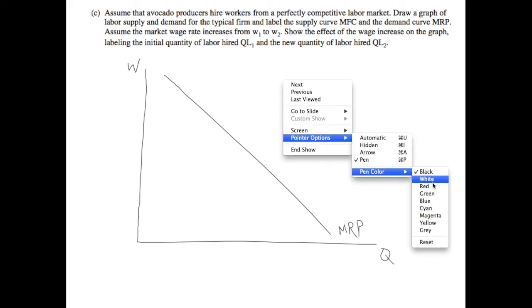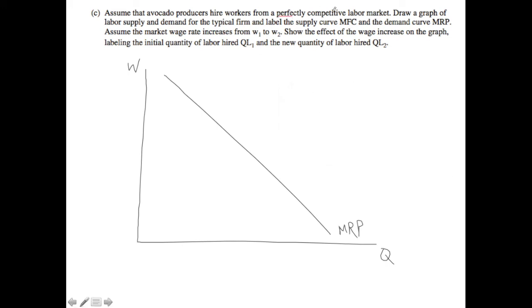So first, let's go ahead and draw the horizontal and vertical axis here. We know that wage is going to be on your vertical and quantity is going to be on your horizontal. And you also know that you're going to be faced with a downward sloping marginal revenue product curve. And what we also know is that we are faced with perfect competition. And therefore, in the case of perfect competition, we know that the MFC is just going to be a horizontal line.